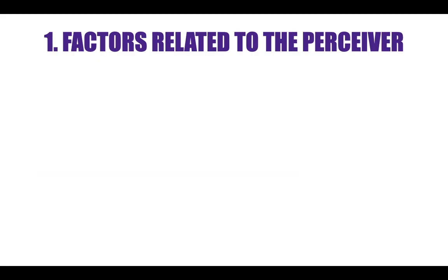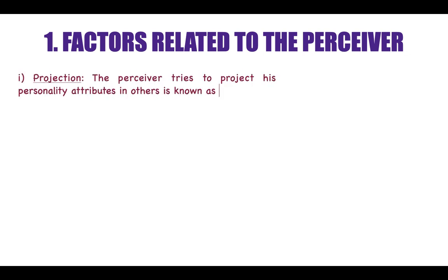Let's understand the factors related to the perceiver. The first factor is projection. The perceiver tries to project his personality attributes in others. For example, if a person is very talkative, he will also think that the other person he is trying to perceive is also very talkative. That is, he is projecting his personality attributes into others.